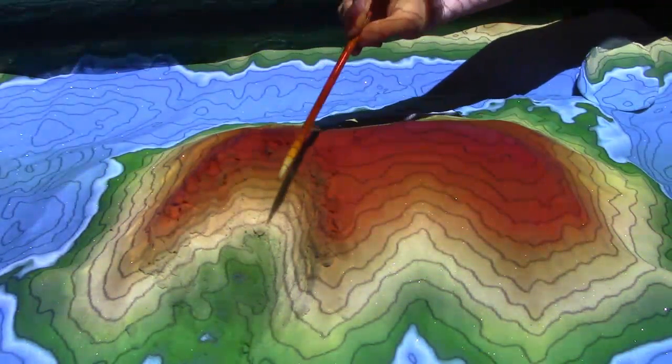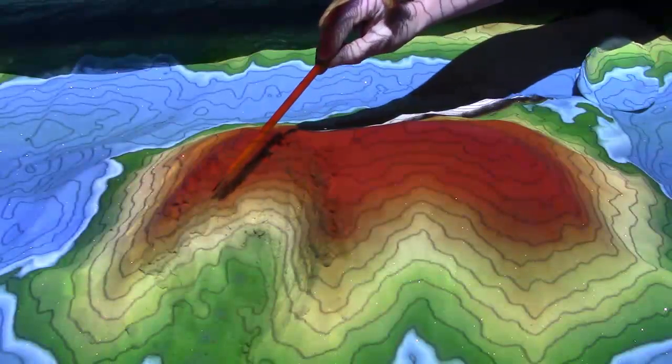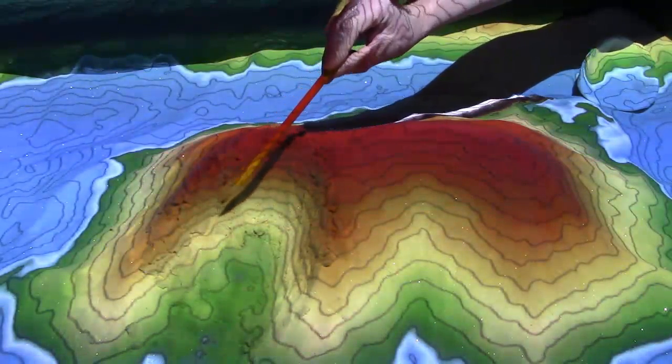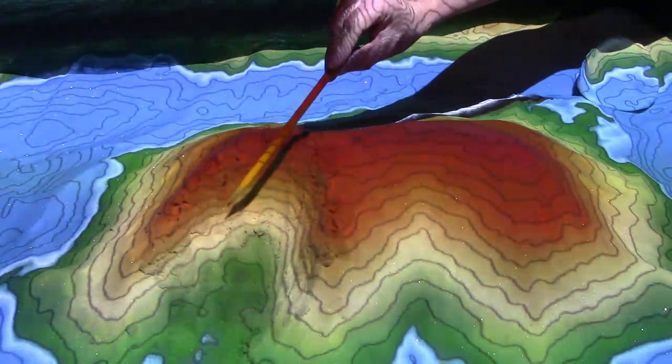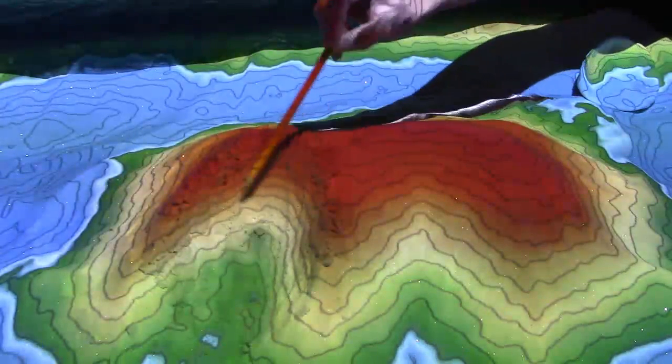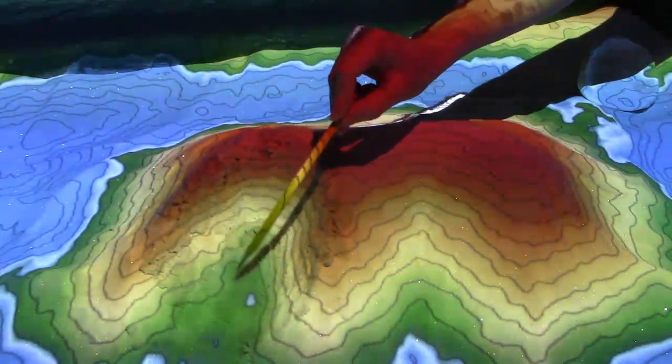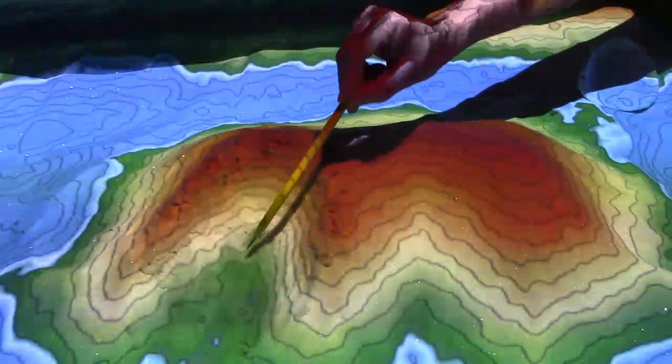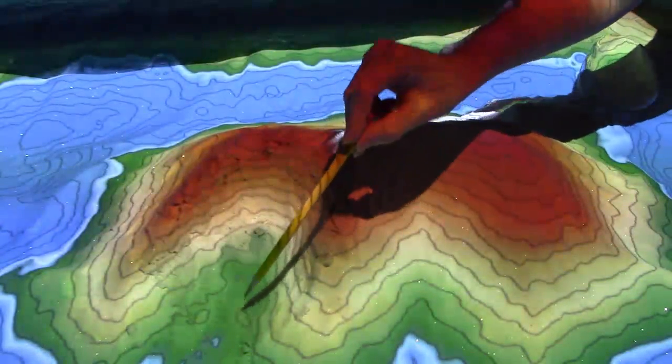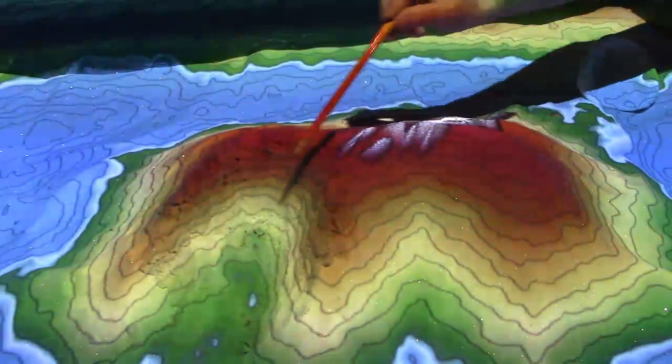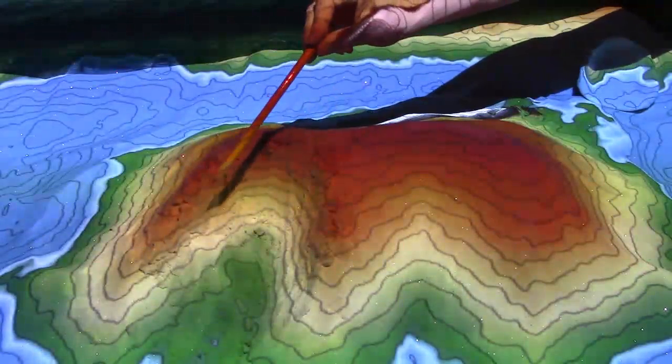So a glacial valley with steep sides, closely spaced contours on the edges—remember closely spaced contours means steep—so steep sides, more even spread out contours at the bottom, suggesting more flat or gentle regions, would look like the letter U.